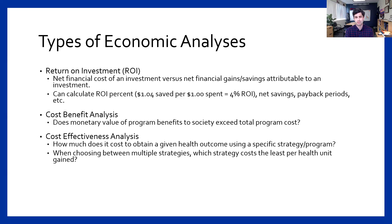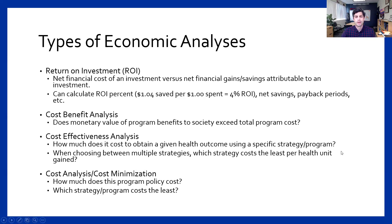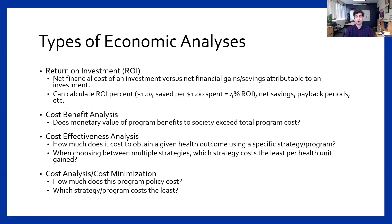Cost-benefit analysis looks at the total value of all benefits to society versus the total program cost. Cost-effectiveness analysis compares multiple different strategies — so if you're excited about increasing high school graduation rates and have four or five programs to look at, what's the best combination to get the biggest bang for your buck? But it has to have multiple strategies — you can't do a cost-effectiveness analysis if you just have one program for one outcome.